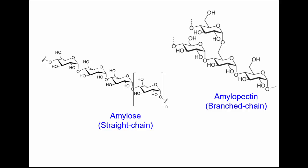Starch contains two polysaccharides: amylose, which has a straight chain — 'poly' as usual just means a big number, thousands or tens of thousands — and the other one is amylopectin, which is a branched chain. Both are chains of glucose residues, with a branch structure in amylopectin of course.